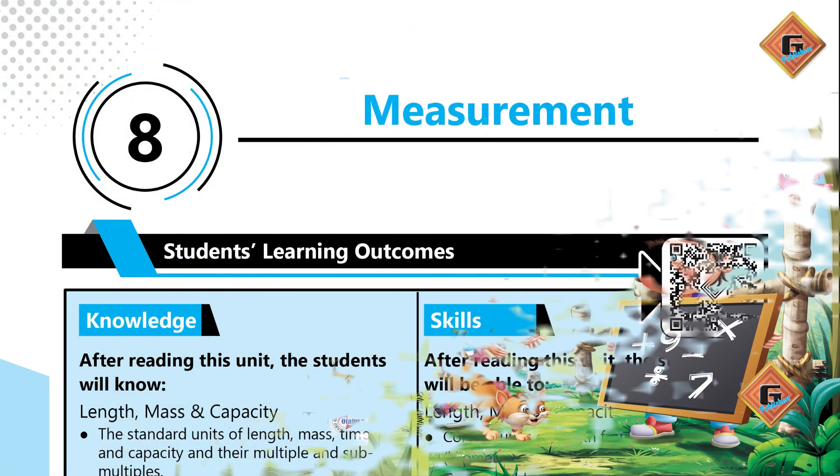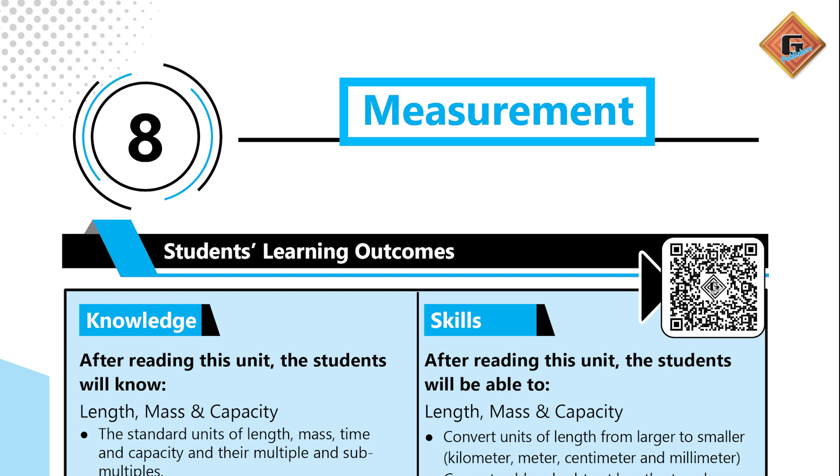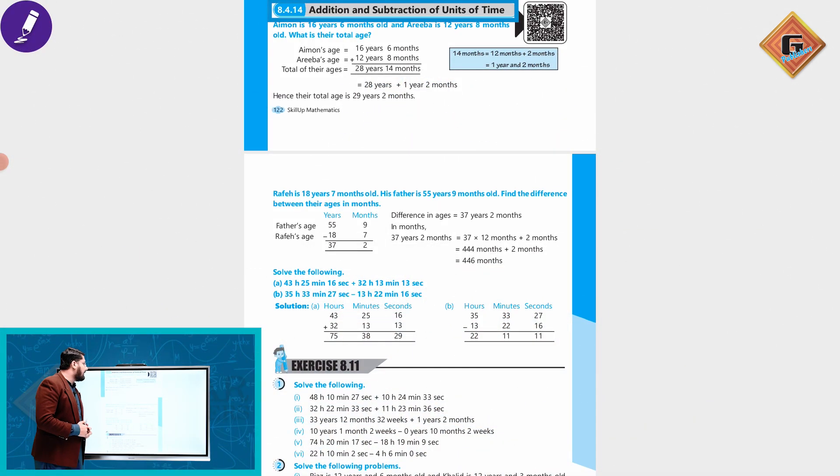The unit is 8. The title of Unit 8 is Main Events. The topic is addition and subtraction of a unit of time. How can we add up and subtract?